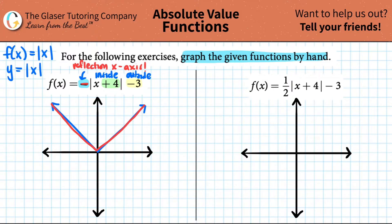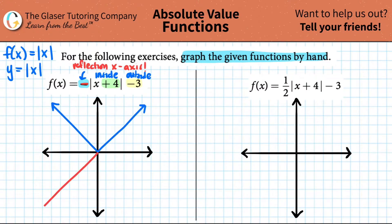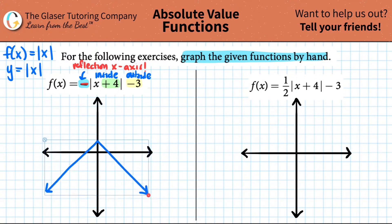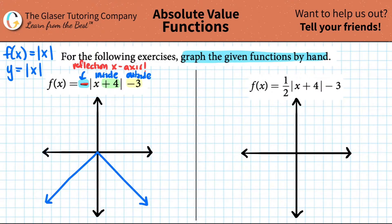A negative value in front is always a reflection about the x-axis. So instead of a V, the graph rotates downward and becomes a mountain top — the inverse of a V. You're reflecting everything across the x-axis, turning the V into a mountain top by rotating 180 degrees. The coordinates stay the same in x but flip in y: (1,-1), (2,-2), (3,-3), and (-1,-1), (-2,-2), (-3,-3).